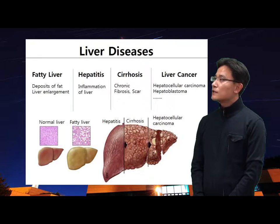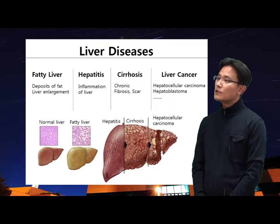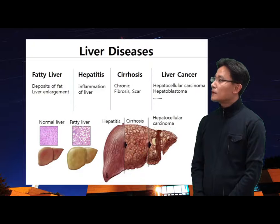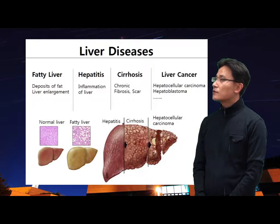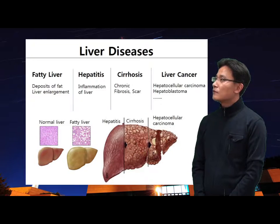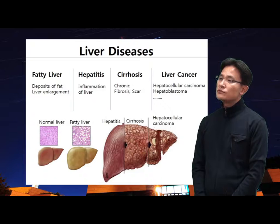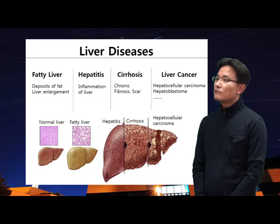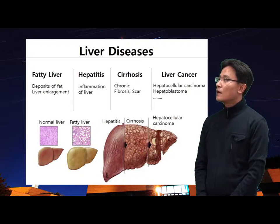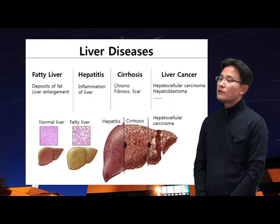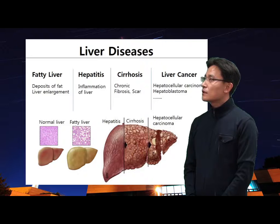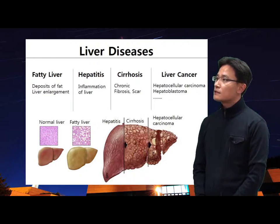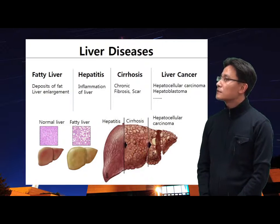There are many kinds of liver diseases. The most widespread are fatty liver, hepatitis, cirrhosis, and liver cancer. Fatty liver is a condition where fat accumulates in liver cells; microscopy shows large vacuoles of fat in liver tissue. Hepatitis is an inflammatory disease of the liver caused by virus, alcohol, toxin, and other factors. Cirrhosis is a chronic liver disease characterized by replacement of healthy liver tissue by fibrosis scar tissue.